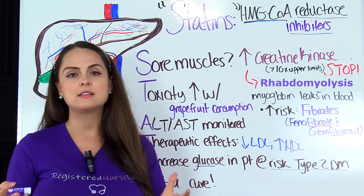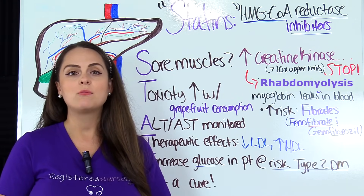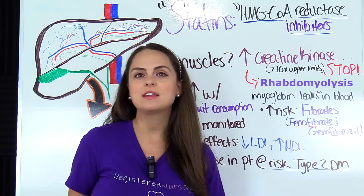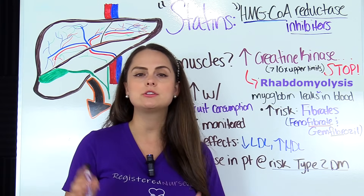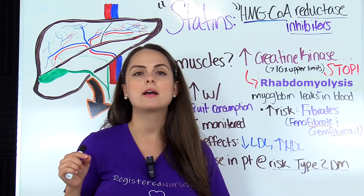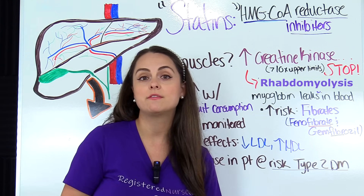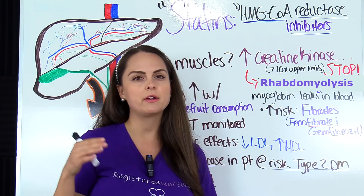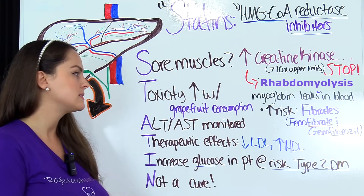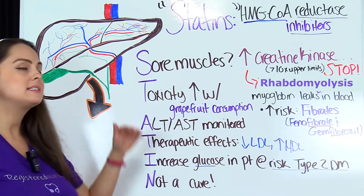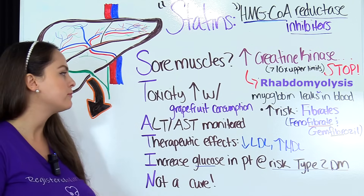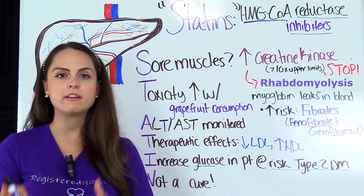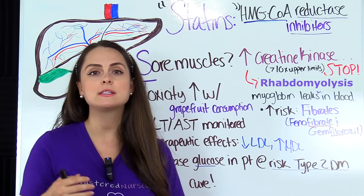Rhabdomyolysis is a condition where the skeletal muscles become very damaged and myoglobin is leaked from those muscles into the blood. Since the kidneys filter our blood, we don't want myoglobin reaching the kidneys because it can lead to kidney failure among other things. There is an increased risk of developing this condition if patients are also taking other drugs such as fibrates — also known as fibric acid derivatives — like fenofibrate or gemfibrozil. Next, T is for toxicity increase with grapefruit consumption. Tell your patient to avoid consuming grapefruit or grapefruit juice because it actually increases the toxicity of statins.